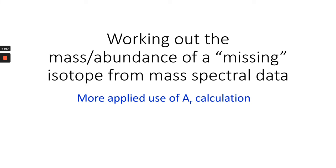Hi and welcome to this clip on how to work out the mass and abundance of a missing isotope from mass spectral data. This is a more applied use of the normal relative atomic mass calculation.